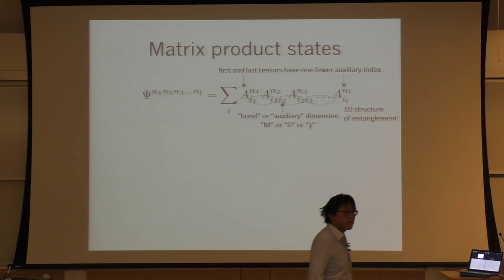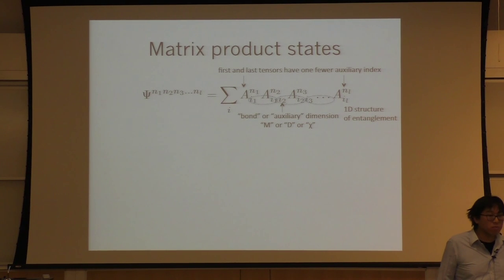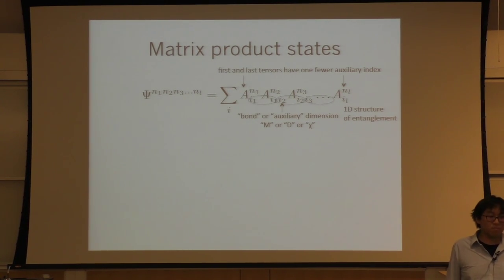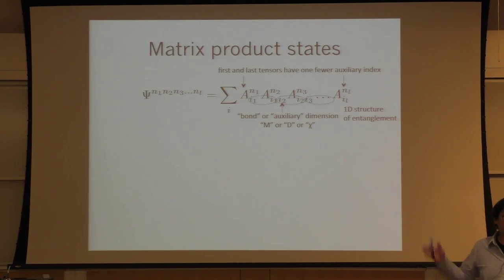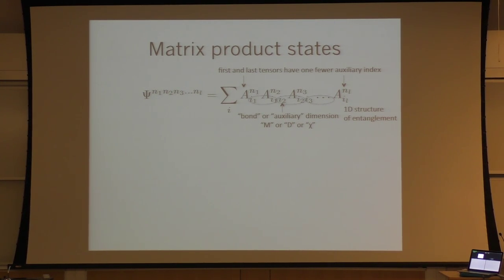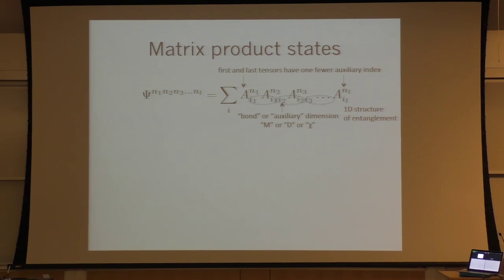The square root of p is the maximum entanglement that can exist in a state of Hilbert space dimension p, but think of i as going up to infinity to make sure it's complete. The first and last tensors can also both have two indices and form a trace — that's the periodic boundary condition case, a ring in the i indices. This can describe sites arranged on a ring in physical space, though you could also use that ansatz for something not on a ring.